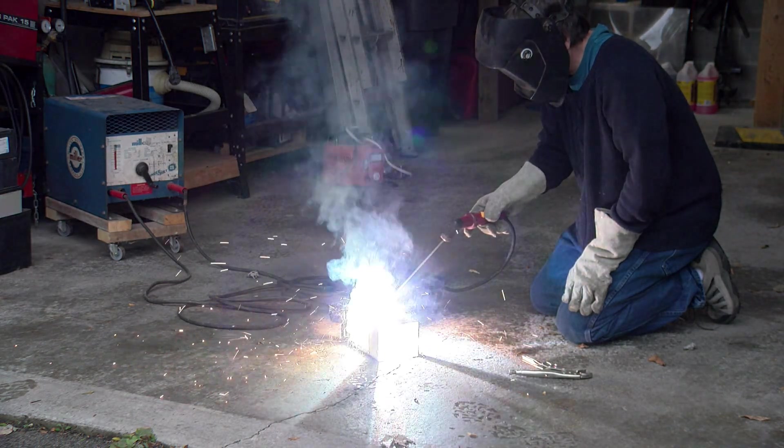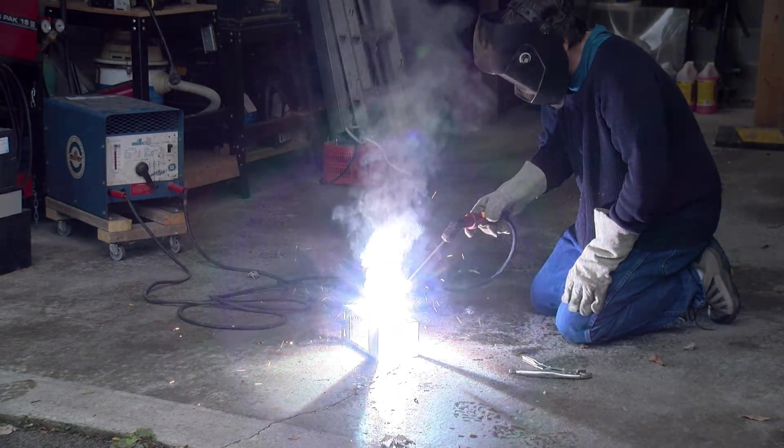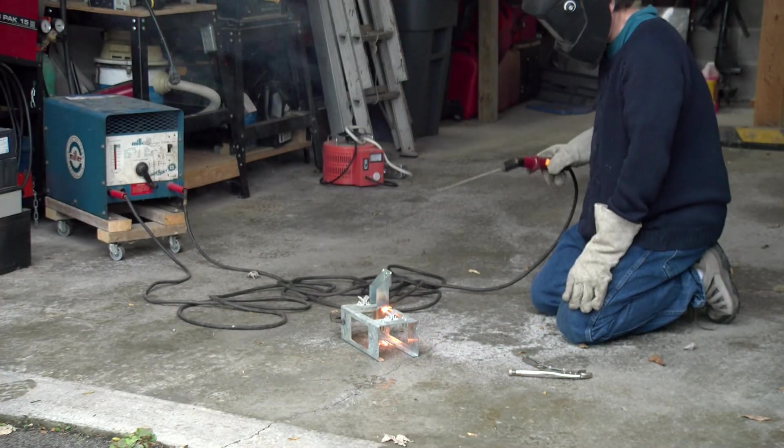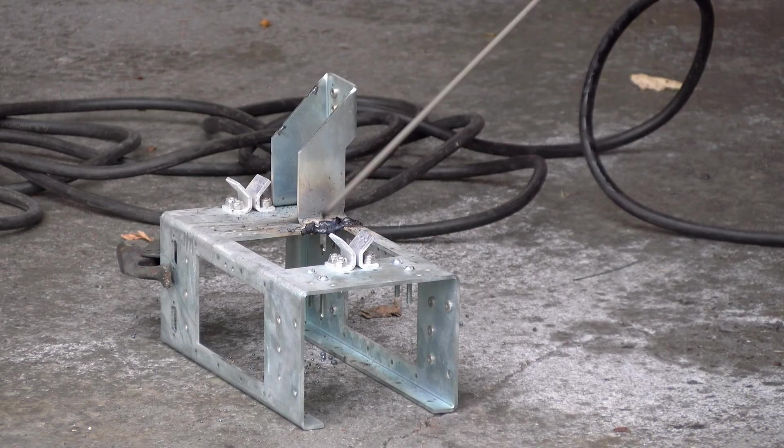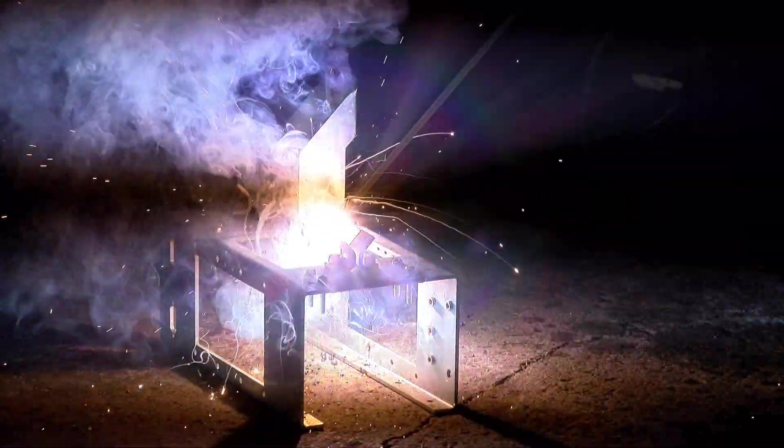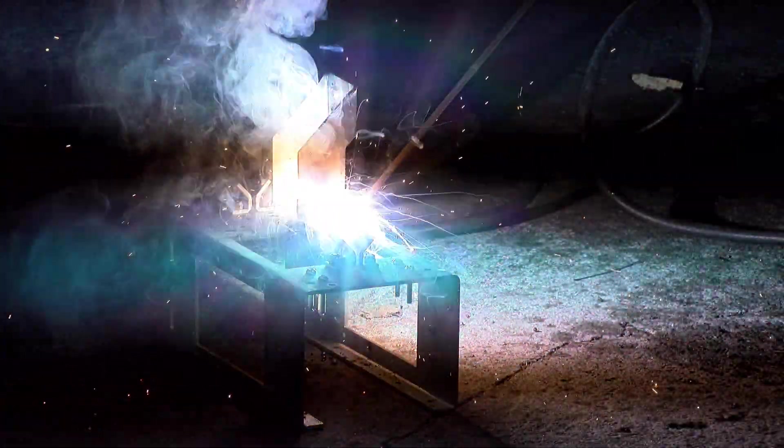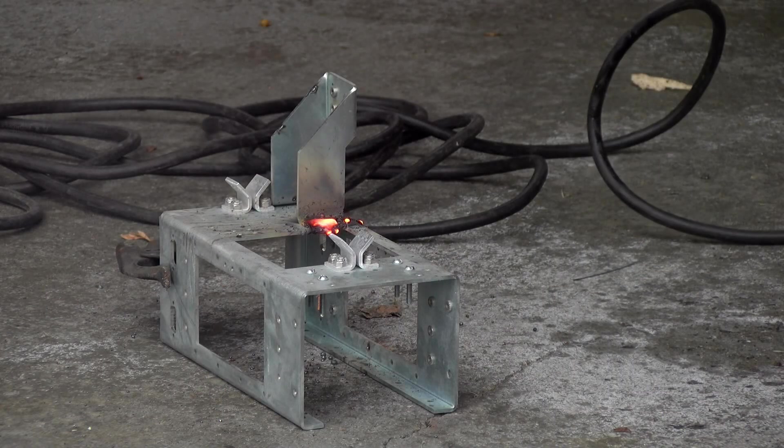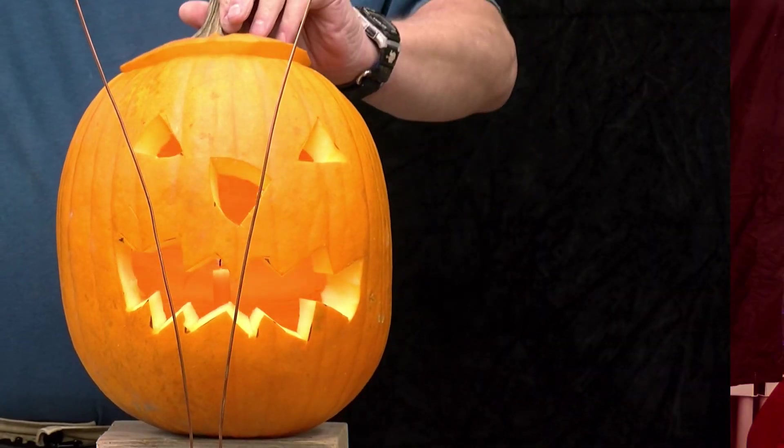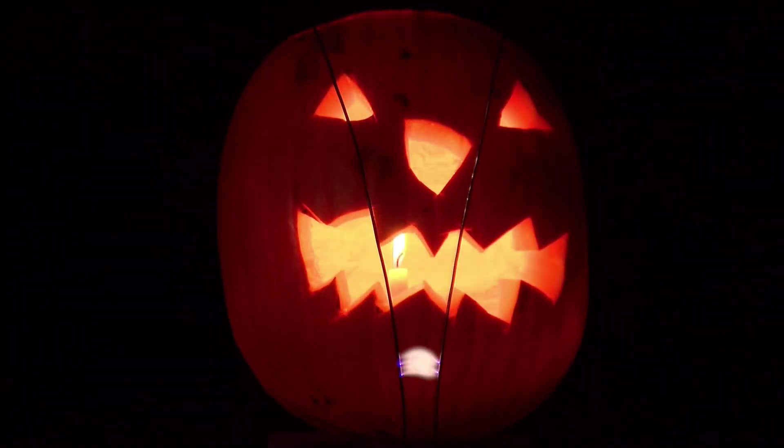And finally, arc welding is used to join many things out of metal. So, there you go. Quite a few practical applications of arcs and electrical discharges. And these are all good examples why we really do need to understand these things to make many of our modern technologies work. Well, that brings this video to an end. I hope you enjoyed it. Happy Halloween and see you next time.